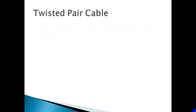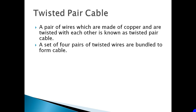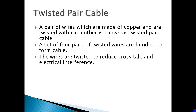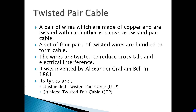Twisted Pair Cable. It is a pair of wires which are made of copper and are twisted with each other. A set of four pairs of twisted wires are bundled to form a cable. The wires are twisted to reduce cross-talk and electrical interference. It was invented by Alexander Graham Bell in 1881.